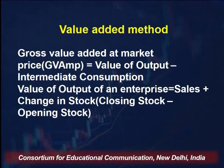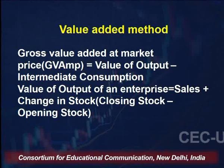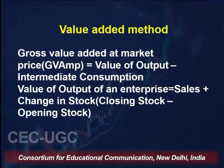We talk about net value to avoid double counting. For example, bread is the final product for a consumer but an intermediate product for a restaurant. The intermediate consumption here is the wheat flour used for preparing the bread. The price of wheat or wheat flour is already taken into consideration, so when we talk about the price of bread, we take only the value addition that has taken place in converting the flour into bread.